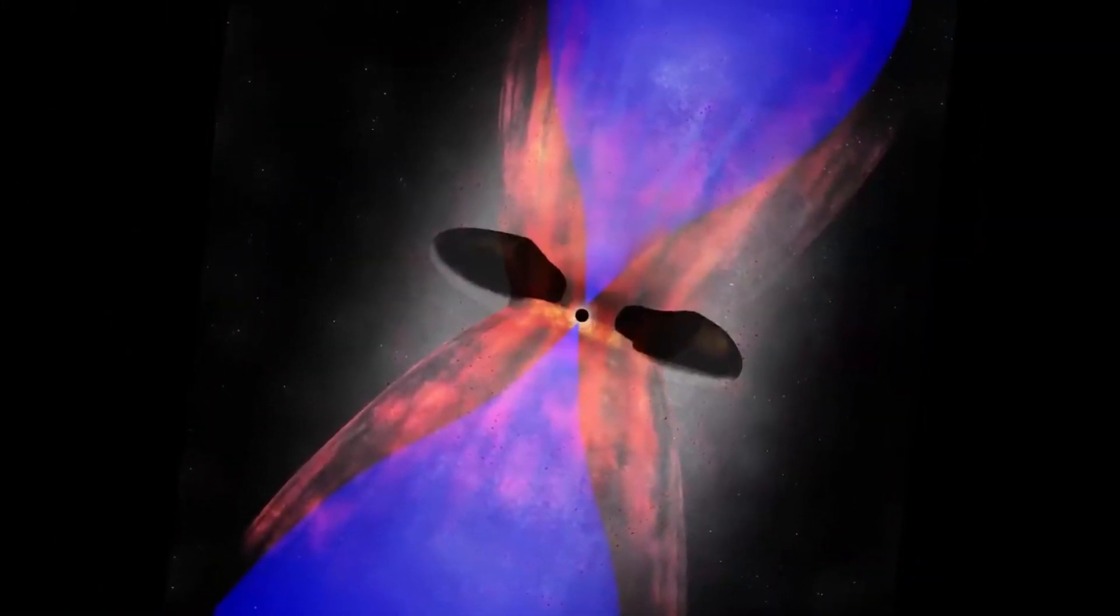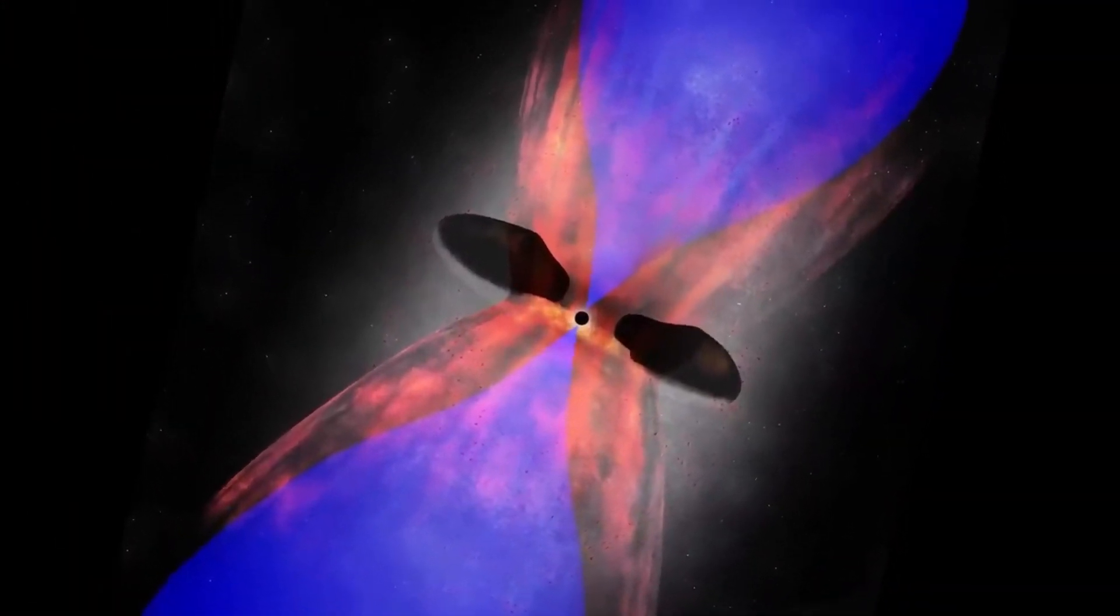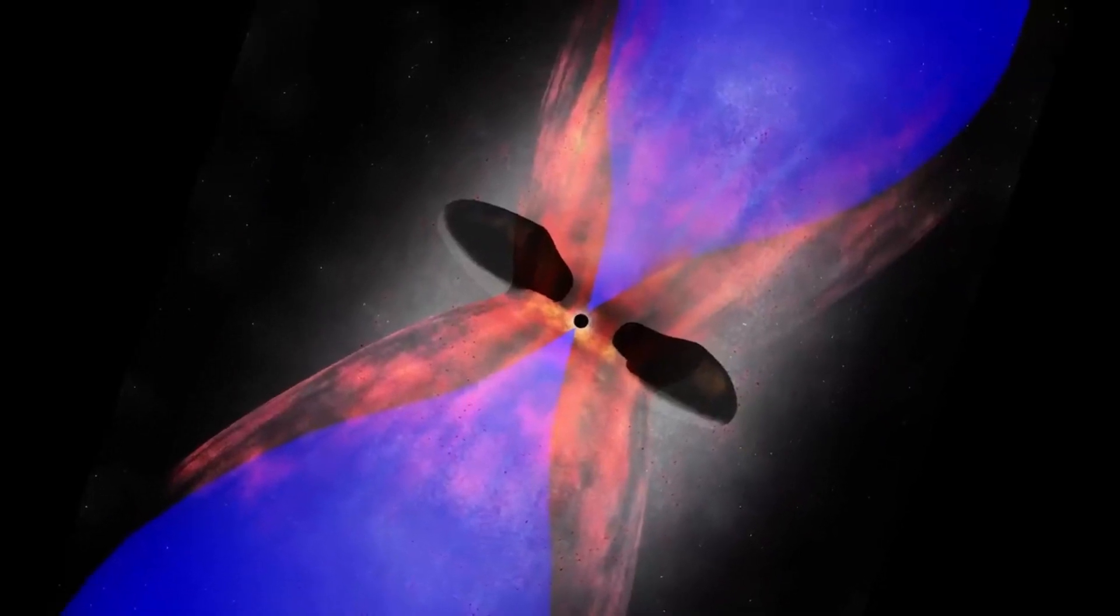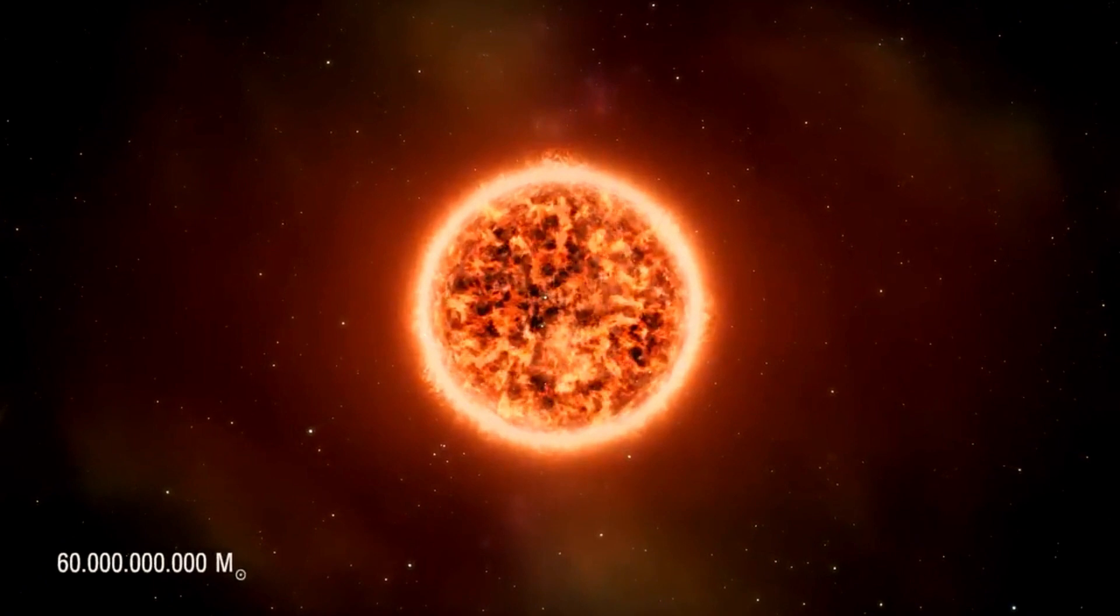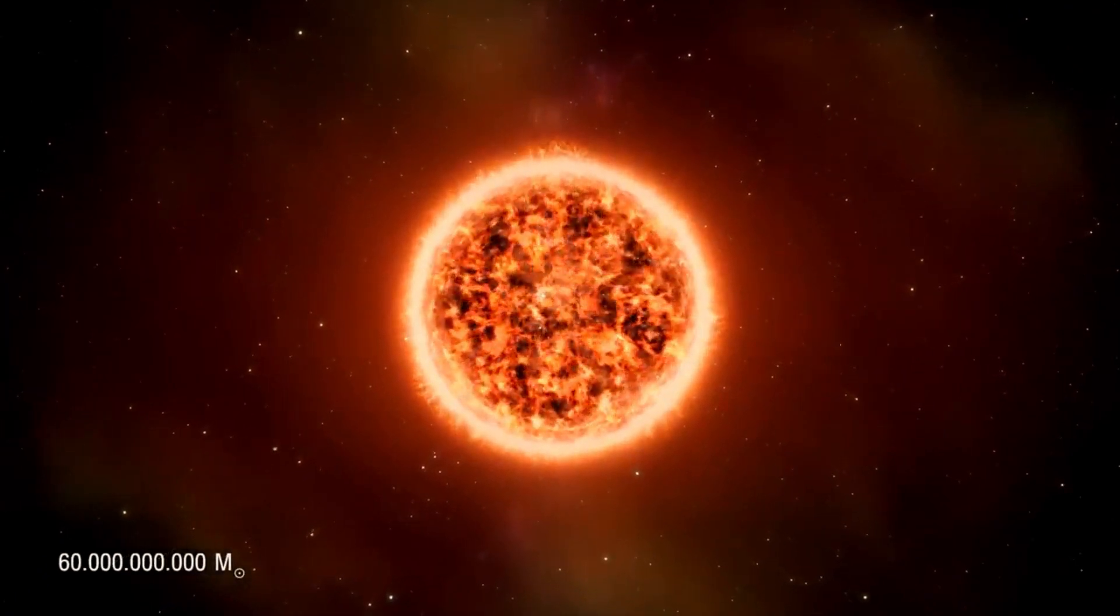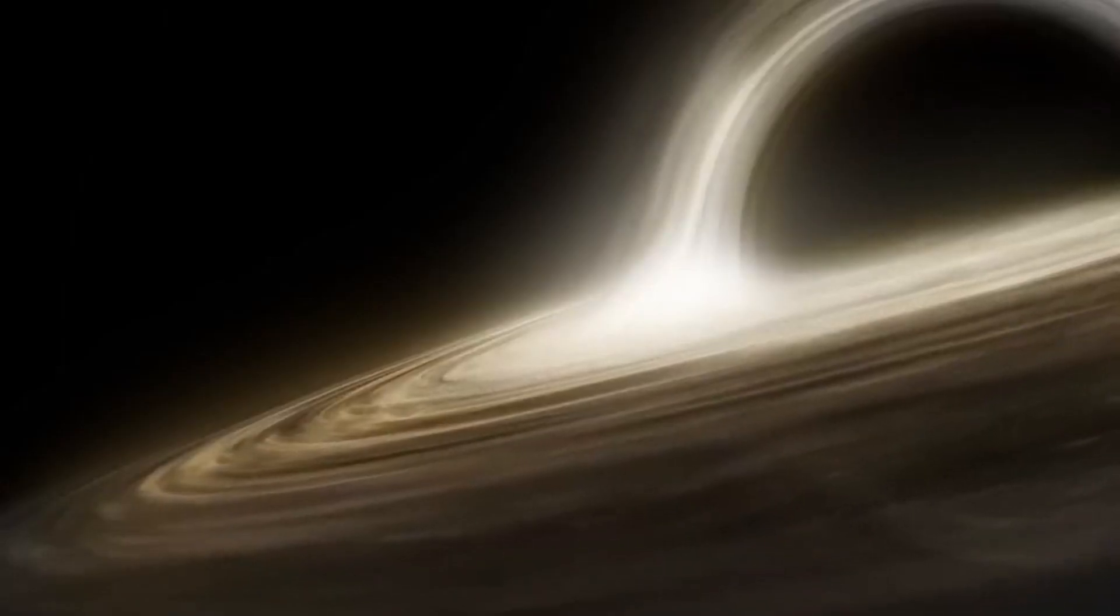And you know what's incredible? Phoenix A is still growing at an estimated rate of about 60 solar masses per year, which amounts to around 60 billion solar masses if it were to live another billion years.